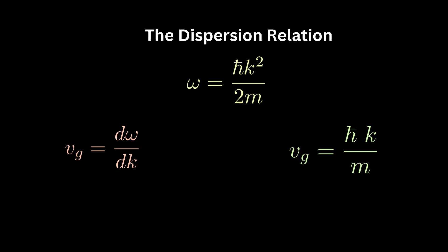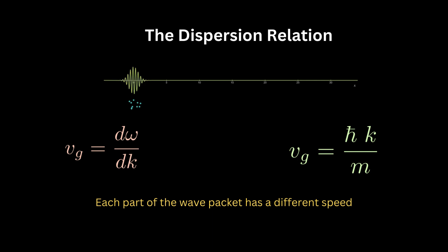As you can see, it's a linear function in k, meaning each part of the wave packet has a different k value, hence a different speed. This makes the wave packet disperse in a short time, just as a group of people walk at different speeds. After some time, they disperse from each other, and the group will get spread out.